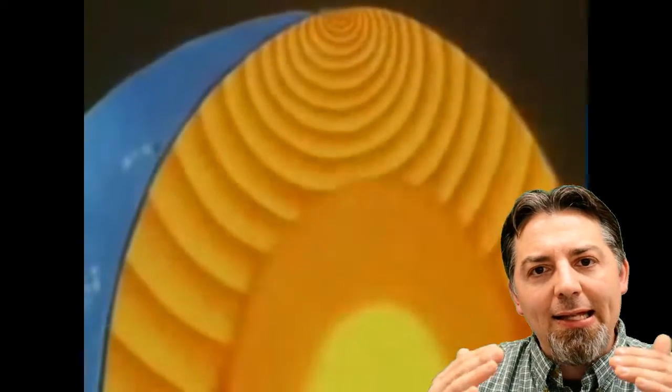P waves do travel through pretty much anything. P waves go all the way through the Earth. But S waves stop. S waves can travel through solids only. And so when they hit that liquid outer core, they stop. They get absorbed. And so that gives us a picture as to what's there.